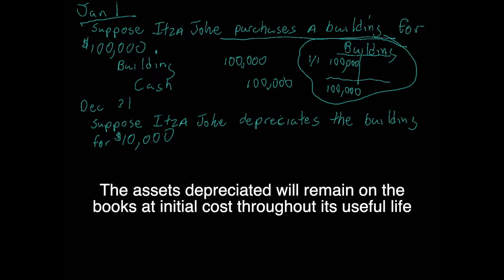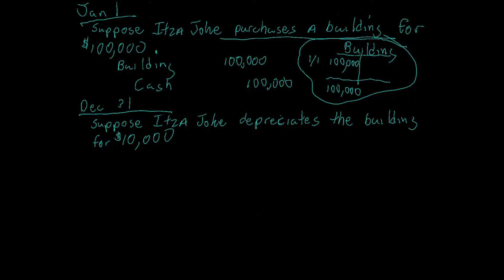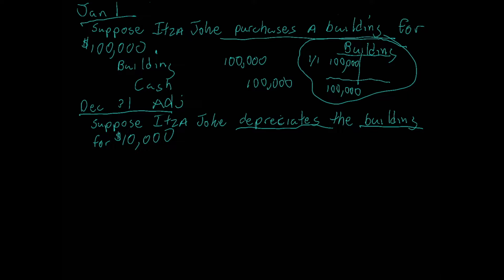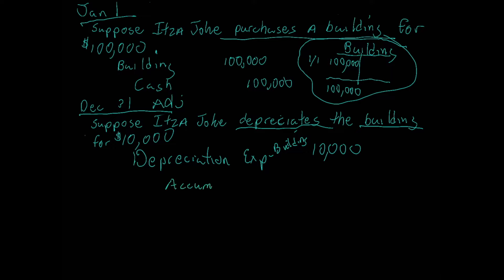At year end, it's always time to make adjustments before we make our financial statements. Suppose IsAJoke depreciates the building for ten thousand dollars. Anytime we depreciate an asset, an expense is created — we call that depreciation expense. So we're going to debit depreciation expense slash building for ten thousand dollars, and we're going to credit an account called accumulated depreciation slash building for ten thousand dollars as well.